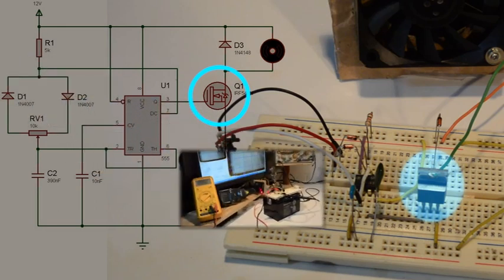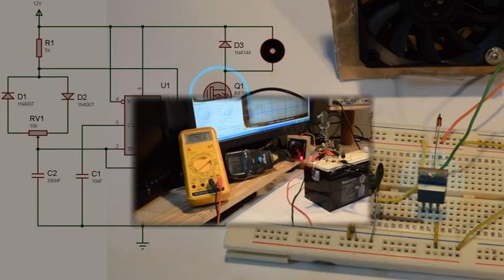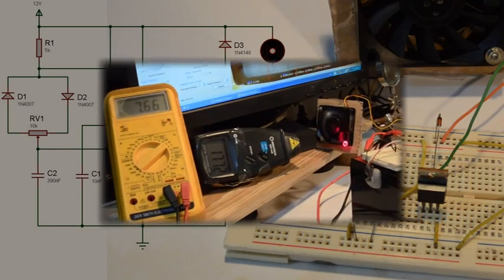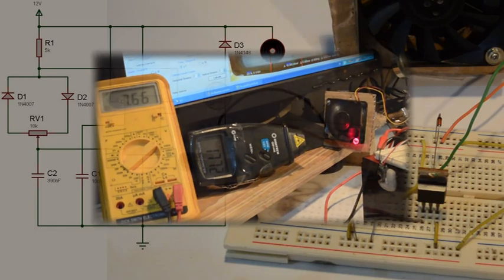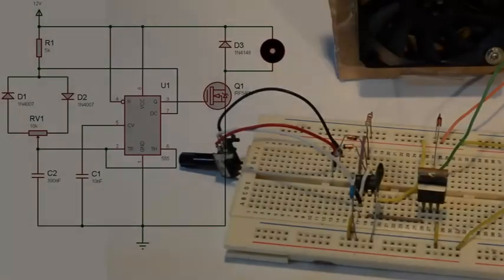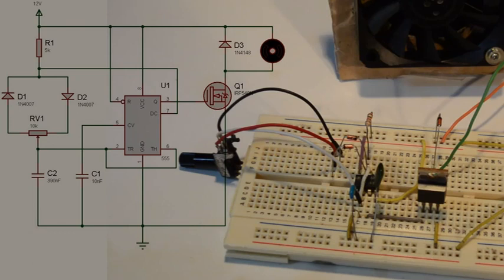Before I show a practical example of component value selection using this breadboard circuit and a computer fan, a few points about the circuit component values from the 555 timer datasheet. Due to the internals of the 555 timer, the datasheet recommends R1 to be a minimum of about 5kΩ. In astable configuration, the value of R2, which in this case is a potentiometer, should be a minimum of 3kΩ to ensure oscillation. The value of capacitor C2 depends upon your desired output frequency and your chosen values of R1 and R2. The equation is given in the datasheet with many online calculators available for this.